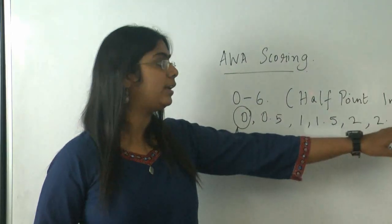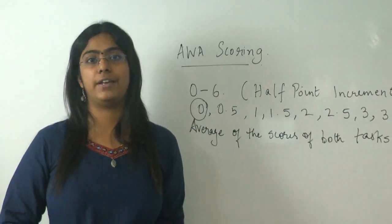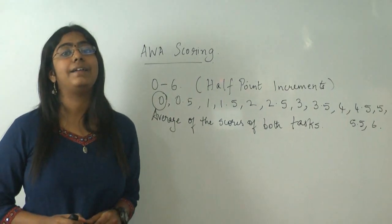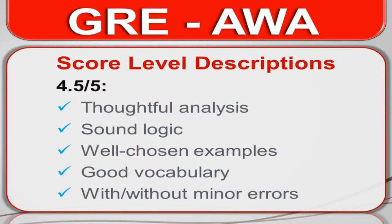Next, we come to the range 5 to 4.5. This again is a good score. Trust me. It tells you that your analysis is very thoughtful. Logic is sound. Your examples are well chosen. And you have a good vocabulary. And of course, it might have minor errors.